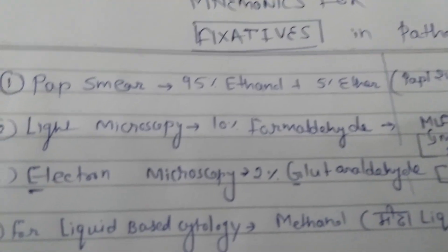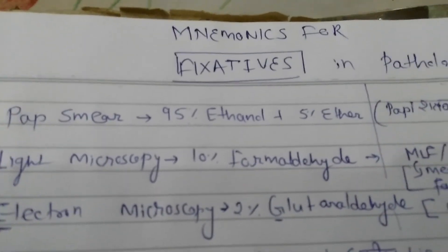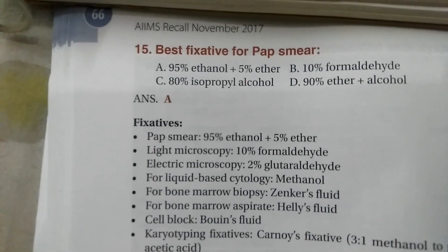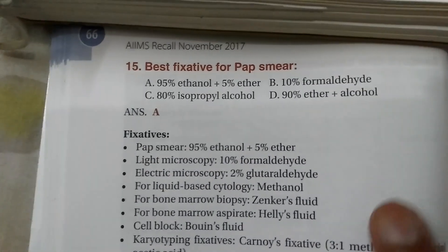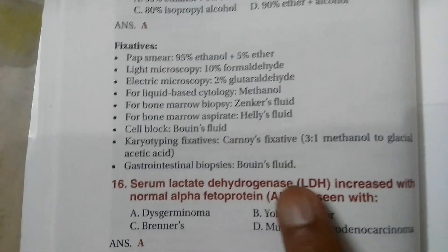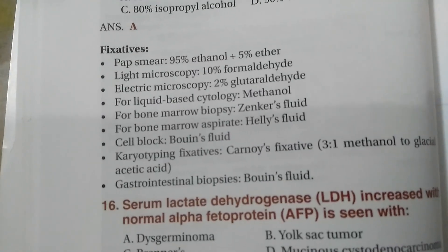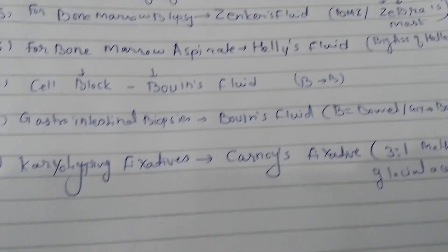Hello friends, since the AIMS exam is very near, I am focusing on AIMS topics. Today we are discussing tricks to remember fixatives in pathology, which is a high-yield topic for AIMS exam. Last year, this question was asked: the best fixative for pap smear. The answer is 95% ethanol with 5% ether. We will first see the list, then the mnemonic part.